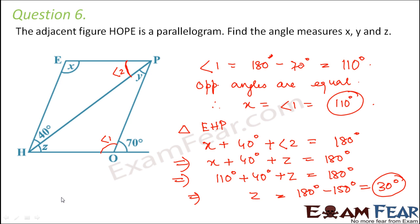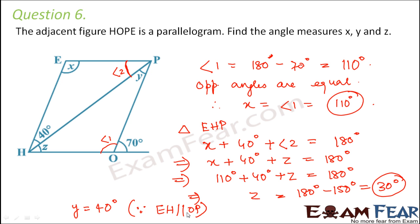We are left with the value of y. We know that this angle is 40 degrees and angle y is also equal to 40 degrees, because these are alternate angles since EH is parallel to OP. So this is how we could find x equals 110 degrees, y equals 40 degrees, and z equals 30 degrees.